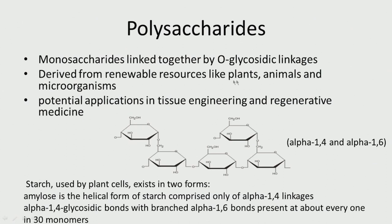Polysaccharides are derived from renewable sources like plants, animals, and microorganisms. They can be used in regenerative medicine and tissue engineering — they form very good scaffolds. If you are thinking about biodegradable scaffolds, this is very good, but they will have poor mechanical strength. For example, if you look at starch, it is used by plant cells and exists in two forms.